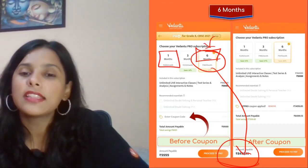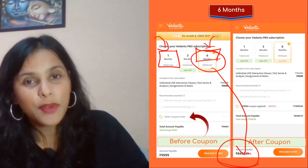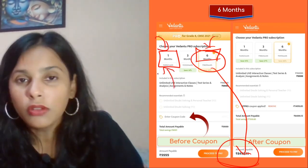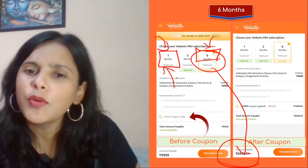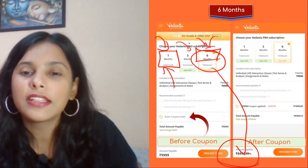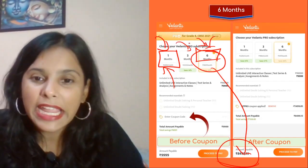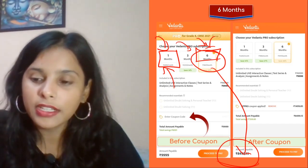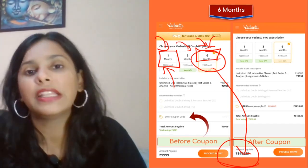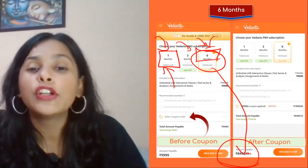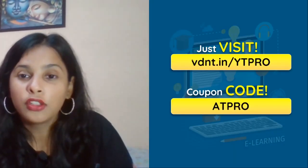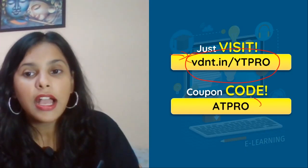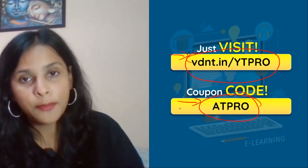Three months plan is for ten thousand rupees but you get it for 5,949 rupees. Six months plan costs 8,409 rupees. So apply the coupon code ETPLO. This link is in the description. Apply your code and get started.